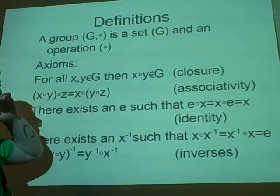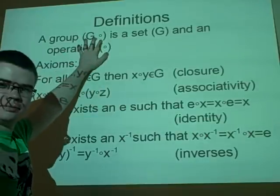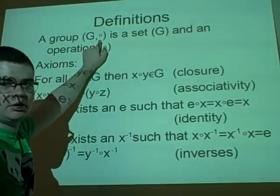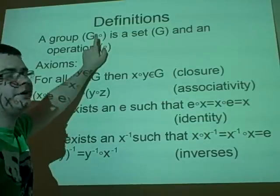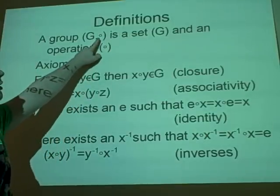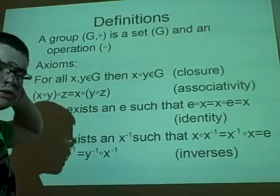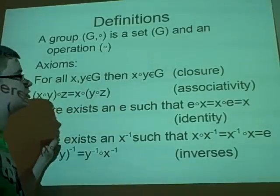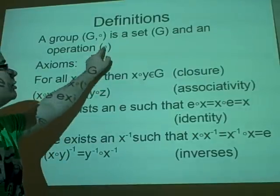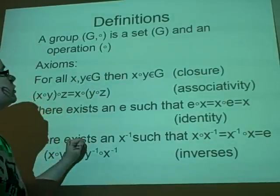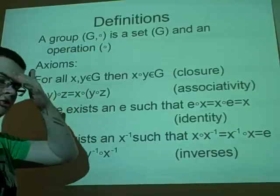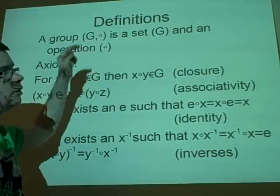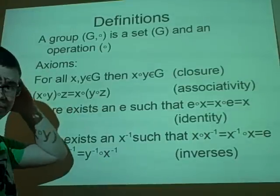We have a group, which is G and blob. He called this blob - it hasn't actually got a name, so you can call it whatever. G is the set, so it could be numbers or matrices or something like that, and this blob is the operation. Say we have the numbers 1, 2, 3 as our G and our blob was addition, then we could see what numbers we could get from that.